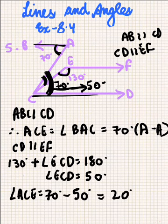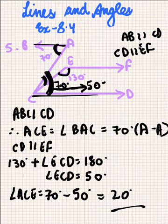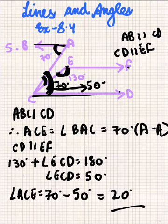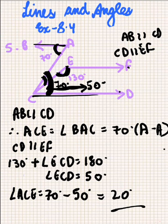To summarize: since AB is parallel to CD, this angle equals the whole alternate angle of 70 degrees. Then since CD is parallel to EF, this angle and this angle form co-interior angles, giving the measure of 50 degrees. We know the total angle is 70 degrees, so we find angle ACE by subtracting these two and get the answer 20 degrees. Thank you for watching.